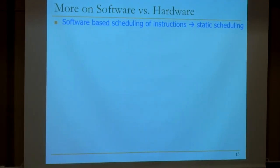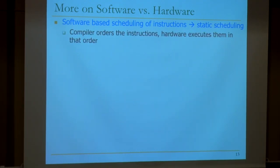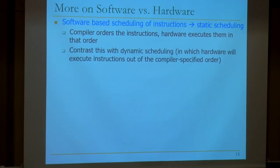Let's look at static scheduling. Remember at the beginning of the last lecture, we discussed how you can schedule instructions from a different basic block — hoist the load up to tolerate its latency. This is static scheduling: the compiler orders the instructions, and hardware executes them in that order. We'll contrast this with dynamic scheduling, where hardware executes instructions out of the compiler-specified order.